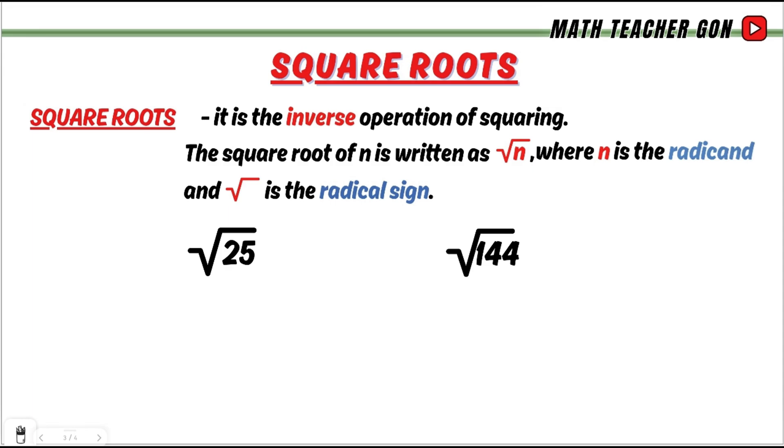The square root of n is written as square root of n, where n is the radicand and this symbol is the radical sign.